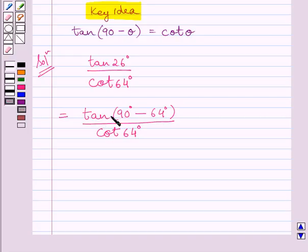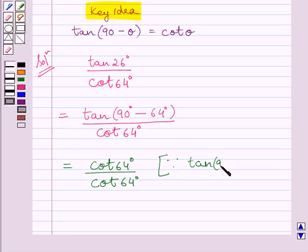So, we can write tan(90 minus 64 degrees) is equal to cot 64 degrees. So, this expression is equal to cot 64 degrees upon cot 64 degrees. Now, this is further equal to 1.